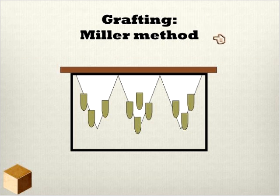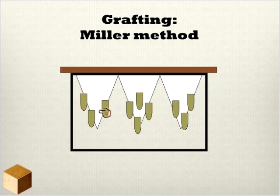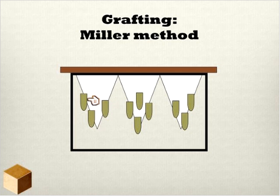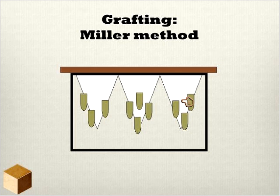Another way to raise queens is the old-fashioned Miller method, where you take a frame of foundation, cut it into triangles to maximize the edge surface area, place it in a colony, let them draw it out, let the queen lay eggs in the newly drawn wax, and then transfer that frame to a queenless colony. They'll raise queen cells from those young eggs and larvae, hanging down off the edge of the comb so they can be easily cut out and placed into other colonies — without having to transfer each larva individually.